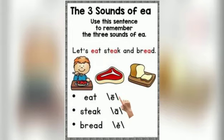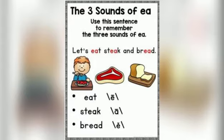If you remember the sentence: let's eat steak and bread. All three words have EA in them, but we are pronouncing or sounding them differently. In 'eat,' the sound of EA is E. In the word 'steak,' the sound of EA is E. And in the word 'bread,' the sound of EA is E.